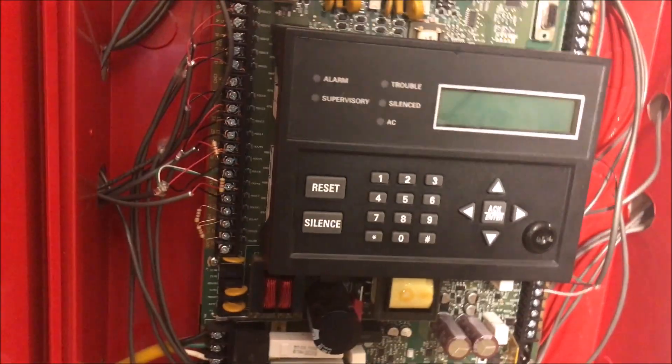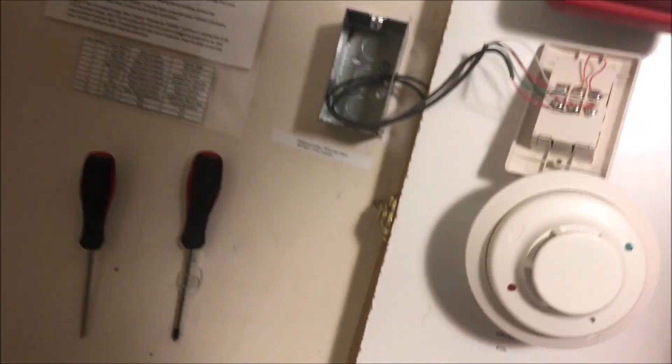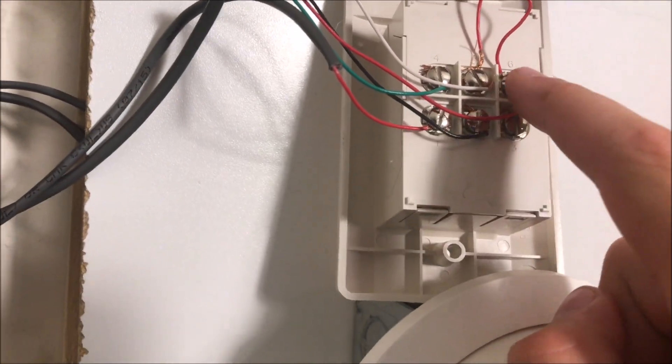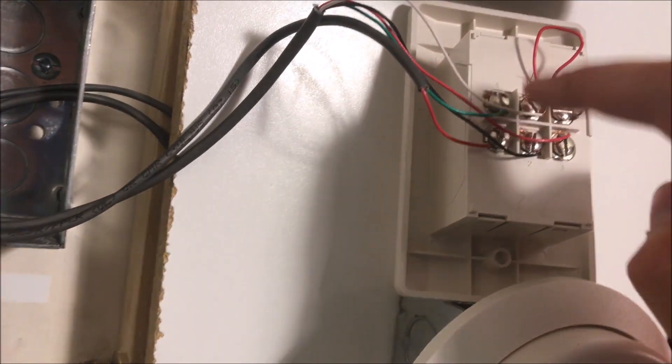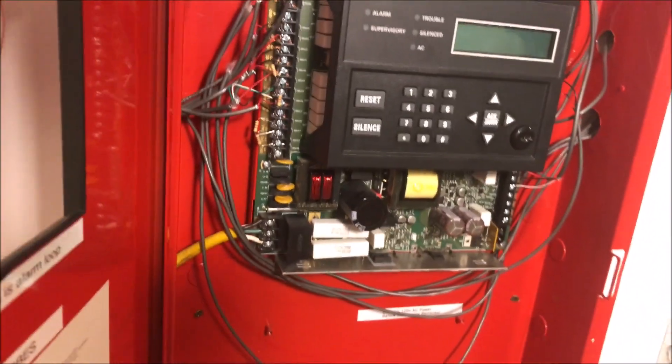And then finally, number six, I have jumping over from number five. Number six, again, is that green LED. And basically what the jumper is doing is saying whenever these zones have power, so whenever the panel is ready and actually checking zones, the green LED will be on.